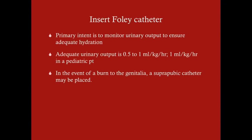We also want to insert a Foley catheter for two reasons. First, we want to monitor urinary output to ensure adequate hydration — 0.5 to 1 mL/kg/hour is adequate urinary output in an adult; for children, it's at least 1 mL/kg/hour. Second, we need a urinary sample to check for myoglobin in the urine, which indicates the kidneys are at risk. In the rare event of a burn to the genitalia that would preclude a Foley catheter, a suprapubic catheter can be placed instead.